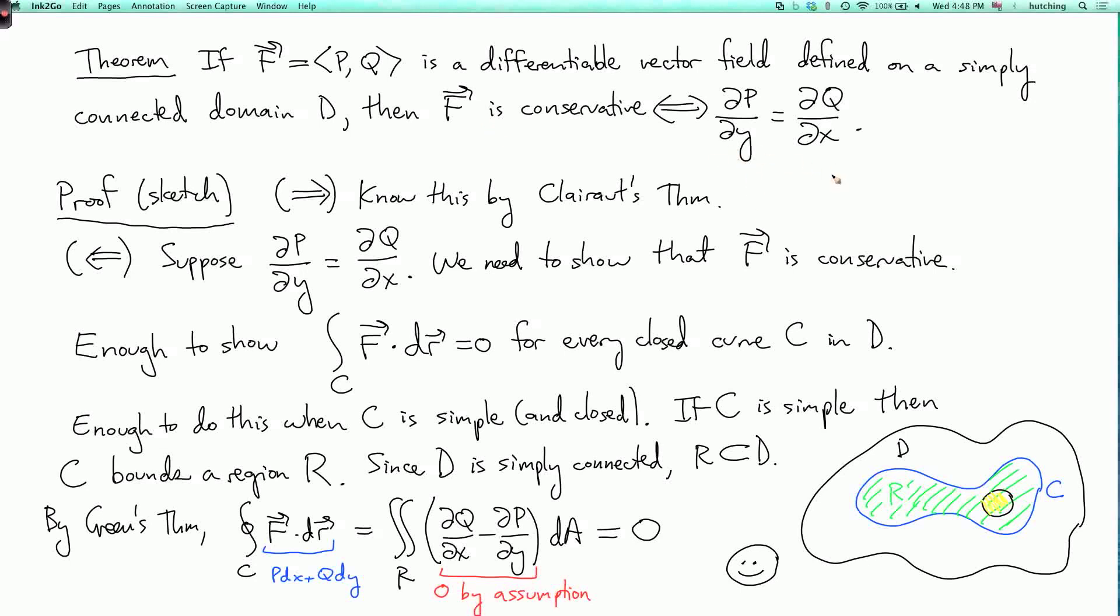Now going the other direction is where we have to use the fact that the domain is simply connected. We assume that this equation holds, that ∂p/∂y equals ∂q/∂x. To prove that f is conservative, we need to show that it integrates to zero around any closed curve. If we restrict attention to the case when this closed curve is simple, then that curve is going to bound some region. And now, because D is simply connected, the entire region bounded by that curve is in D, because D has no holes in it. So now we can apply Green's theorem to get that the integral around that curve is zero.